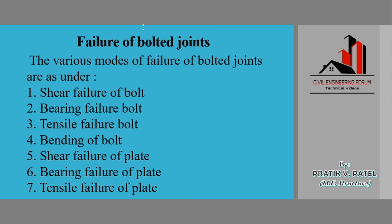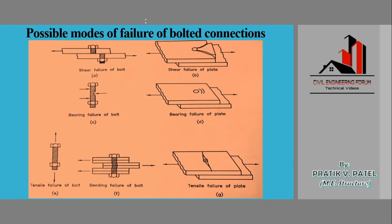Here I've shown numerous diagrams representing all the types of failures. This figure shows shear failure of bolt — two forces not in the same line, with some eccentricity, cause the bolt to fail in shear. Similarly, for shear failure of plate, if we apply tension force in the plate in this manner, there is a possibility that the bolt doesn't fail but the plate does fail in shear.